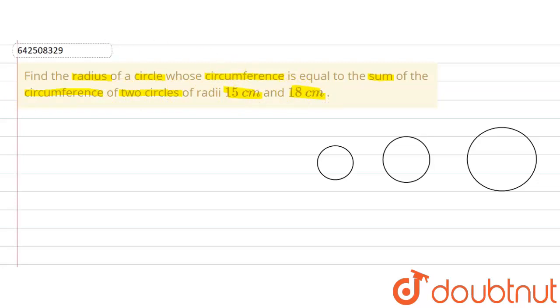So the question is saying that there are two circles of radii, one is having a radius of 15 cm and the other, the bigger circle is having a radius of 18 cm.